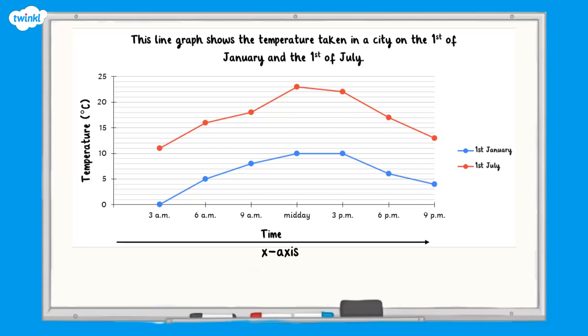The horizontal axis, or x-axis, goes from left to right at the bottom of our graph. On this graph, it tells us the time that the temperature was taken. It is labelled in steps of 3 hours, starting at 3am and finishing at 9pm.